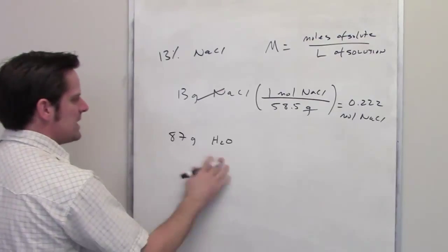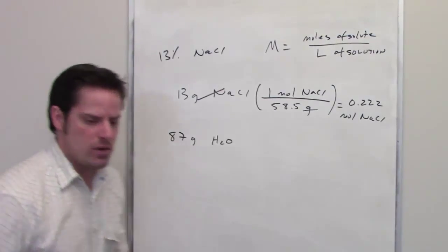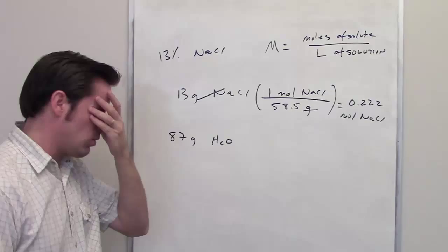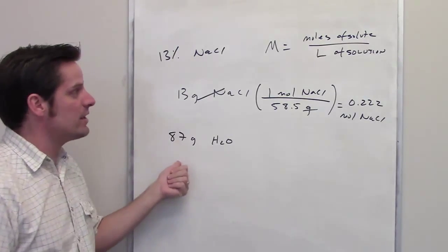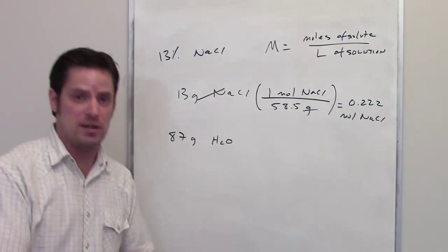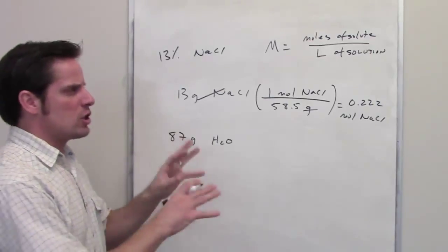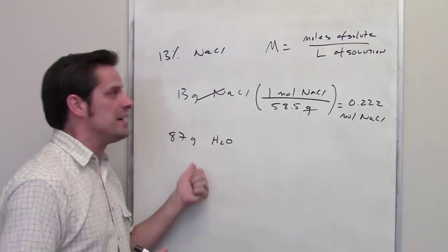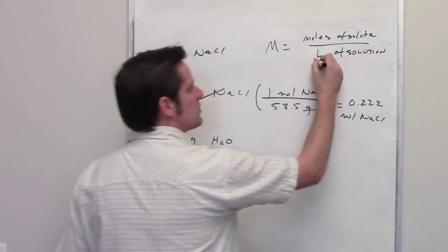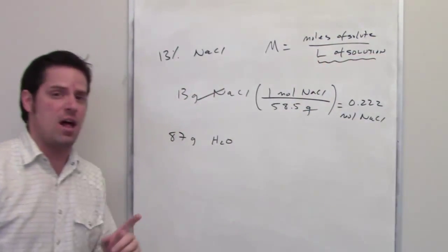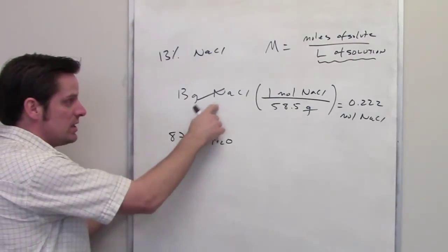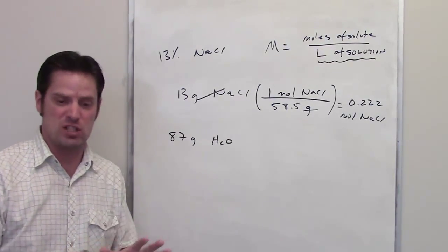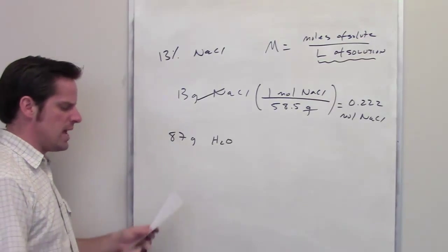Now, for this 87 grams of water, you might think you just have to determine how many liters 87 grams of water corresponds to. However, when determining molarity, we aren't just calculating liters of the solvent. We're calculating liters of the entire solution itself, which includes the sodium chloride, which might increase the volume slightly. So how do we do that?